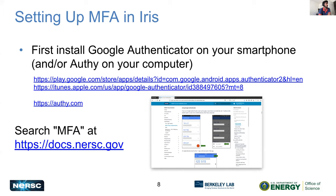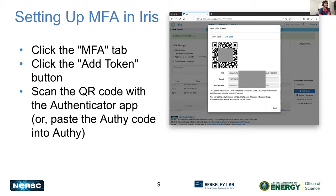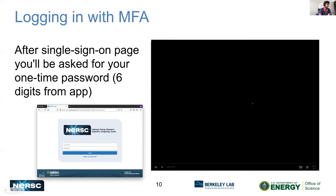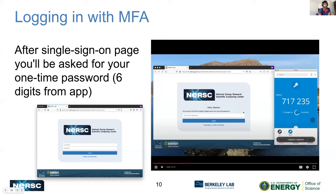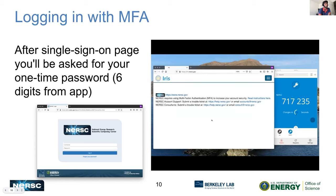MFA is something you can get set up. If you have an Android or Apple phone, you can download Google Authenticator from iTunes or Google Play. You can search for MFA in our documentation and it will guide you on setup. In IRIS, there is a QR code that you scan on your phone. Once you scan it, you'll get a six-digit token on your phone — that's your one-time password. You put in your MFA token right after your password, and that will get you into the system.